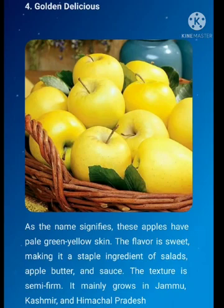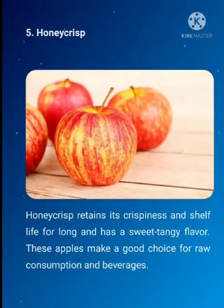Golden Delicious. As the name signifies, these apples have pale green-yellow skin. The flavor is sweet, making it a staple ingredient of salads, apple butter and sauce. The texture is semi-firm. It mainly grows in Jammu Kashmir and Himachal Pradesh. Honeycrisp retains its crispiness and shelf life for a long time and has a sweet tangy flavor. These apples make a good choice for raw consumption and beverages.